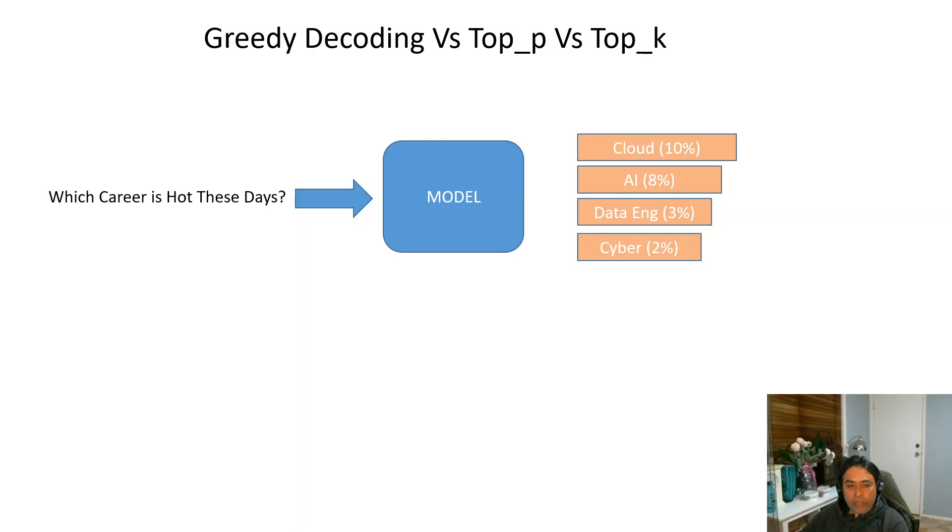Whenever we ask a question from a language model, it goes into its dataset and finds the similar answers. After finding the similar answers, it assigns a score to each answer or to each token.